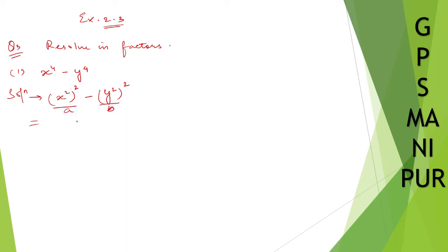a squared minus b squared, it will be a plus b, a minus b. So x squared minus y squared, a minus b, and x squared plus y squared.